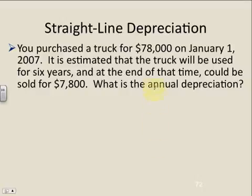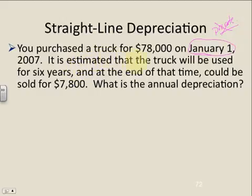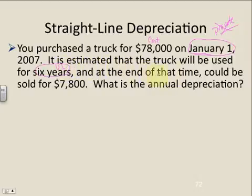Here's an example. You purchase a truck for $78,000 on January 1st. Always take the date into account because if it's not at the very beginning of the year, we need to do something called prorate — we'll get to that in a little while. It's estimated that the truck will be used for six years — that's our useful life. And at the end of that time, it could be sold for $78,000 — that's our salvage value. We have the three variables we need for our equation.